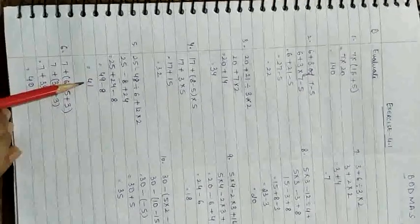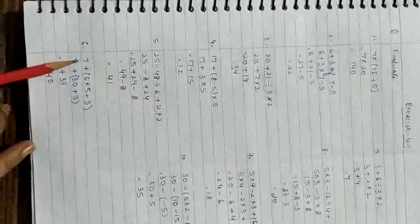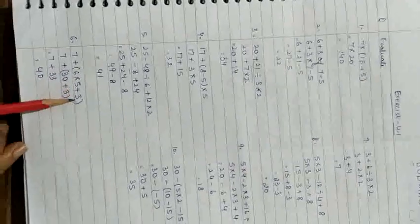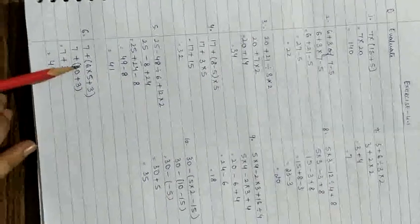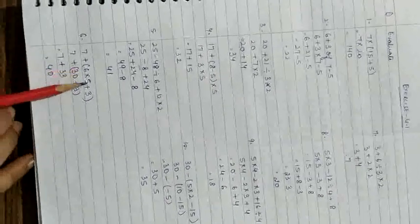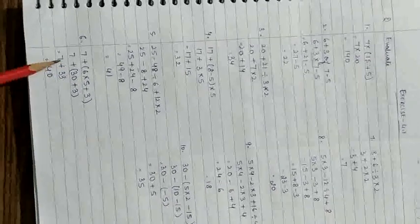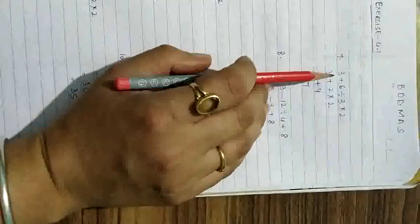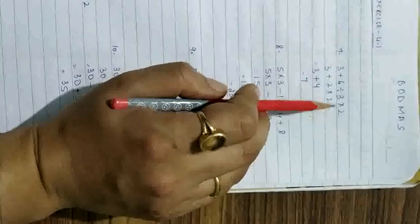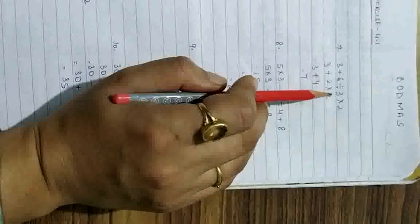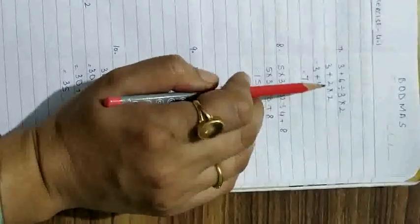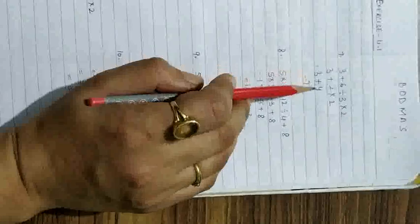Sixth part: 7 + (6 × 5 + 3). Solve the bracket — inside the bracket do multiplication first: 6 × 5 = 30, then 30 + 3 = 33. So 7 + 33 = 40. That is the answer. Seventh part: 3 + 6 ÷ 3 × 2. Divide first: 6 ÷ 3 = 2. Then multiply: 2 × 2 = 4. So 3 + 4 = 7.